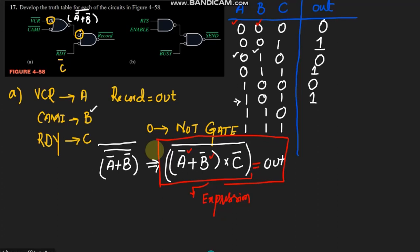For a=1, b=1: 1' = 0, 1' = 0, so 0+0 = 0, multiplied by c' which is 1, so 0×1 = 0 and the whole complement gives 1. From this expression I will also get 1 here as well.